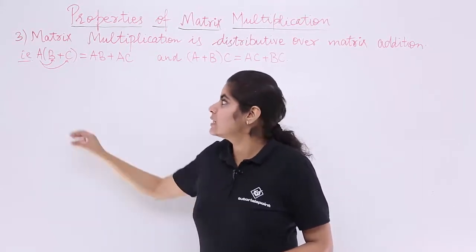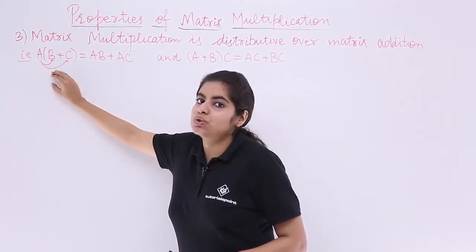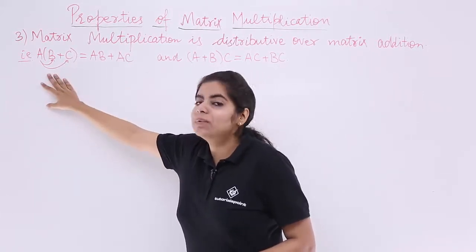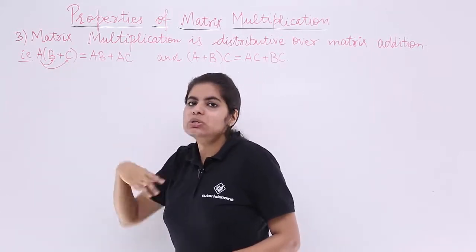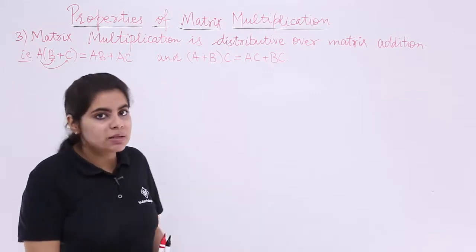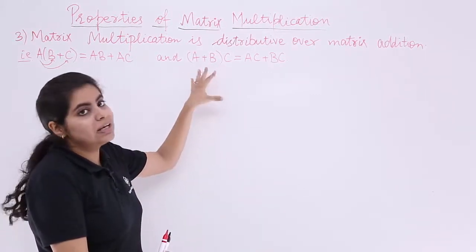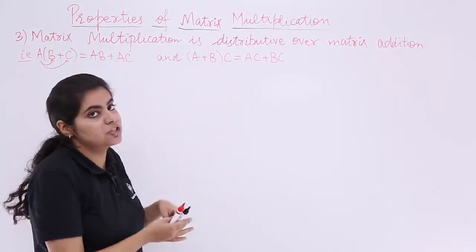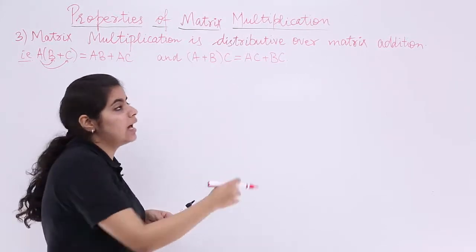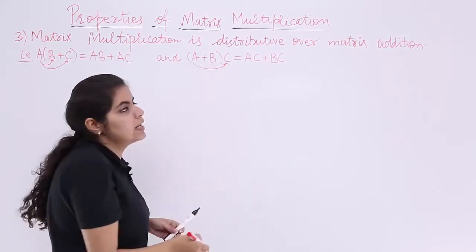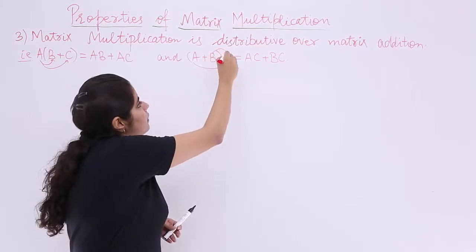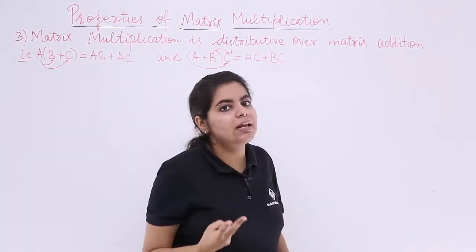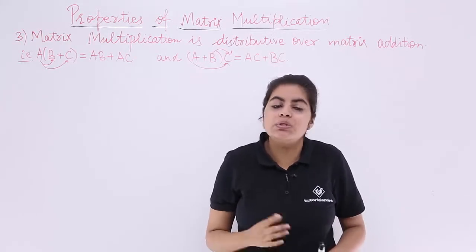What is happening is there is something called distribution — this plus sign will be there and we are getting two terms from one term, so it is called the distributive property. Similarly, there is another form: (A plus B) into C, meaning first addition then multiplication. What happens is A will be multiplied by C and B will be multiplied by C, giving AC plus BC. Again, we get two terms from one term — distribution.